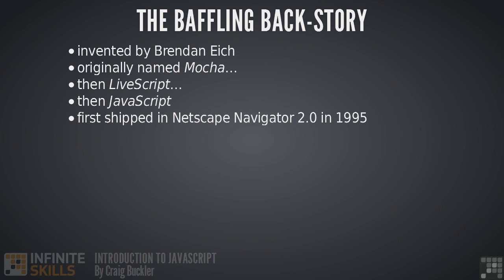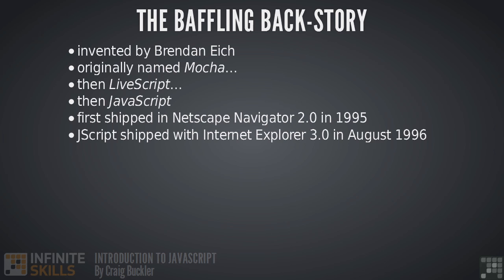Meanwhile over at Microsoft, the company were rapidly developing their own web browser in an attempt to stop Netscape making dominant inroads into their desktop territory. They actually reverse engineered JavaScript and copied it exactly, even the bugs. But to avoid any trademark issues they called it JScript rather than JavaScript, and it shipped with Internet Explorer 3 in August 1996.